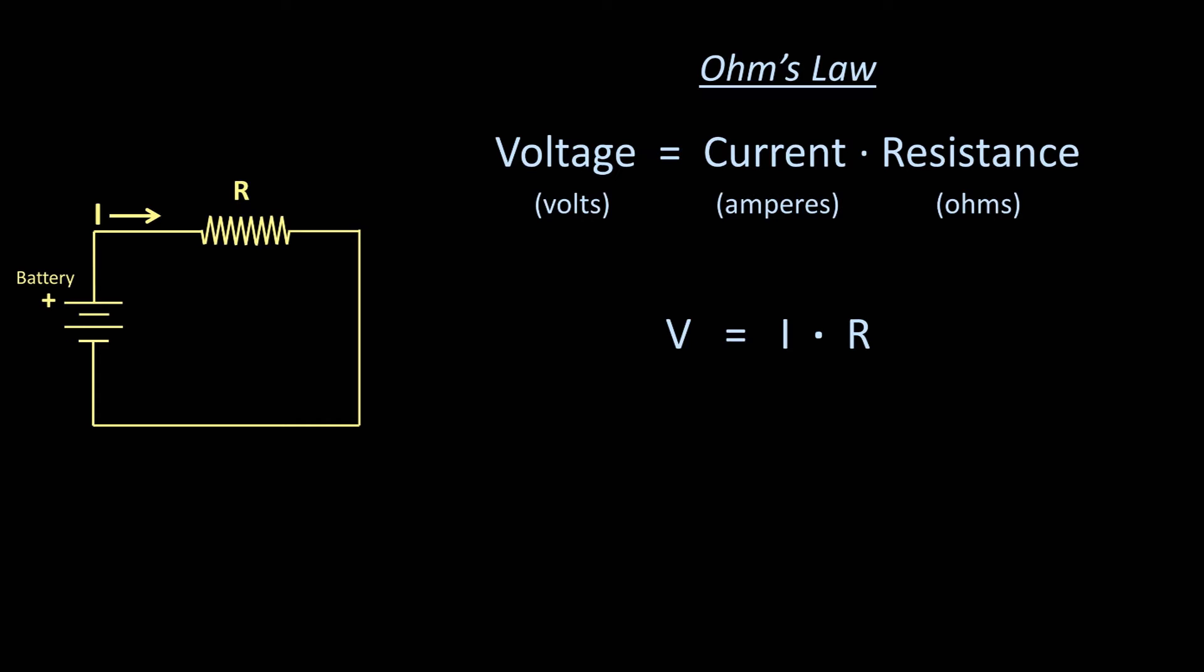An extremely simple Ohm's Law problem might give us the voltage of the battery, suppose it's 12 volts, and the value of the resistor could be 4 ohms, which is frequently represented by the Greek letter omega. We could be asked to solve for the amount of current traveling through the circuit. So 12 volts equals current times 4 ohms, and the current is 3 amperes, usually shortened to amps. It's very straightforward.